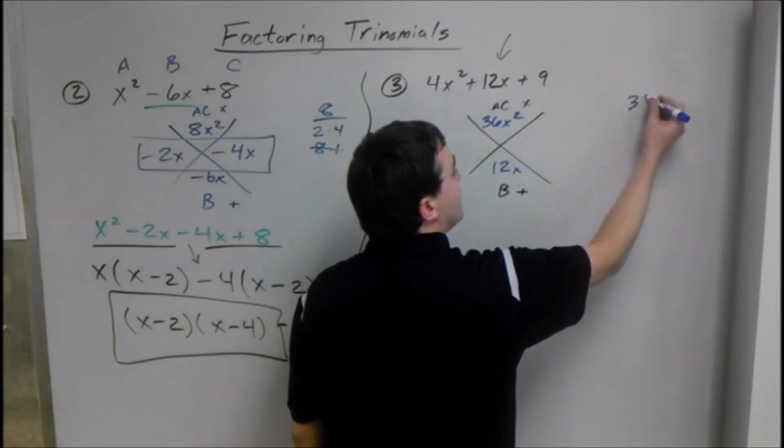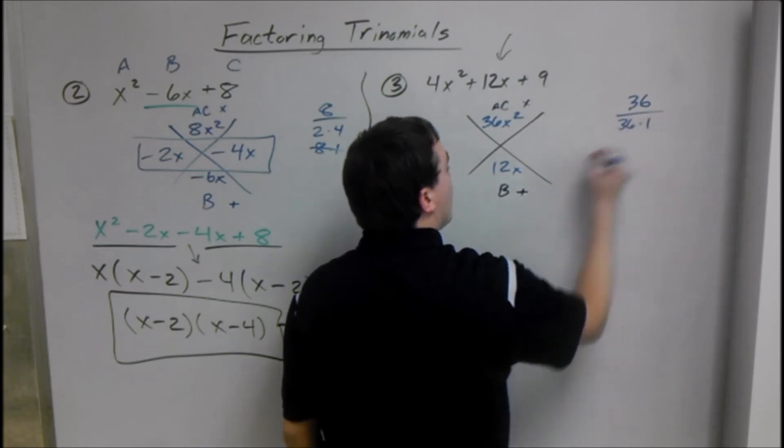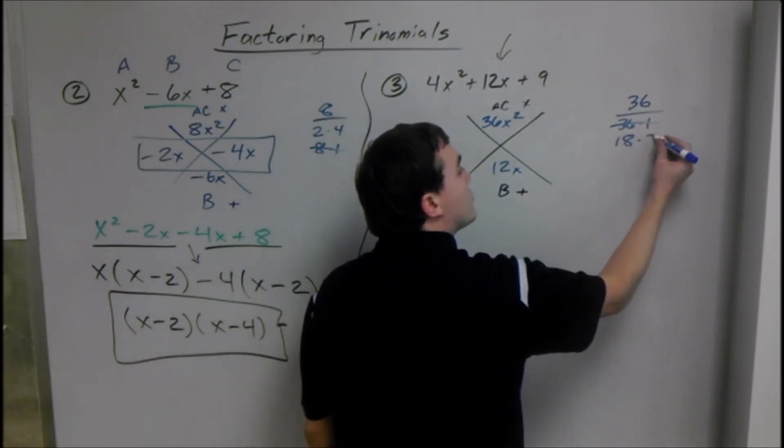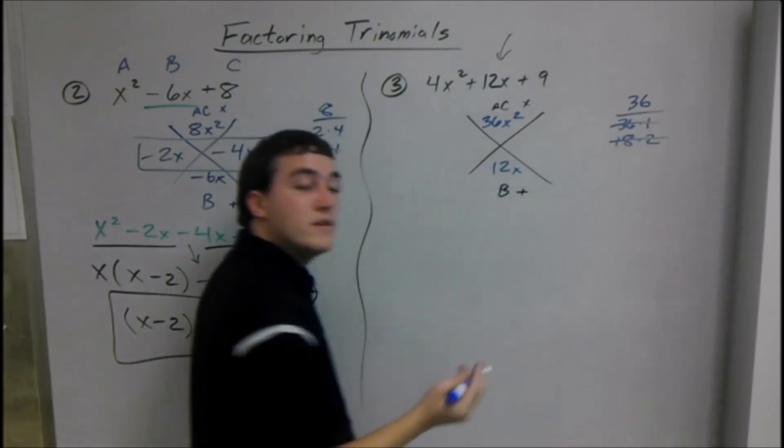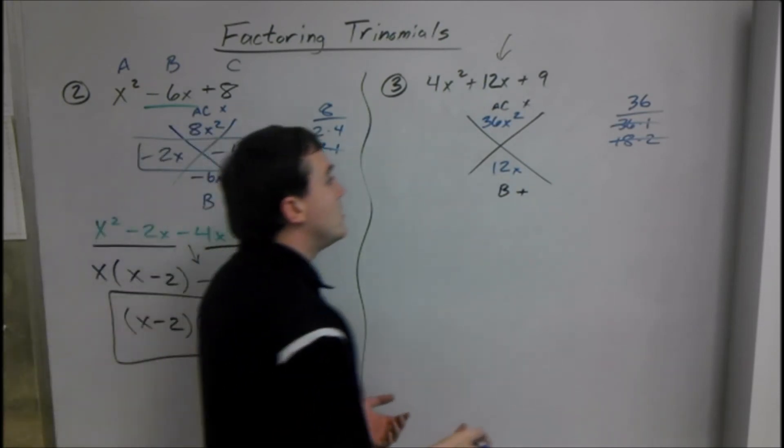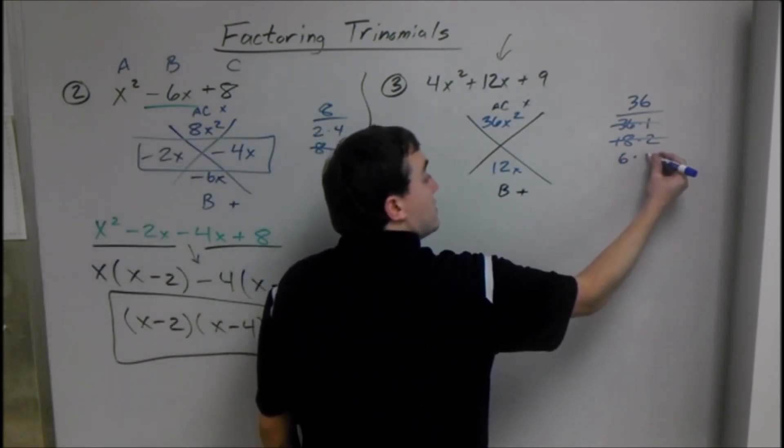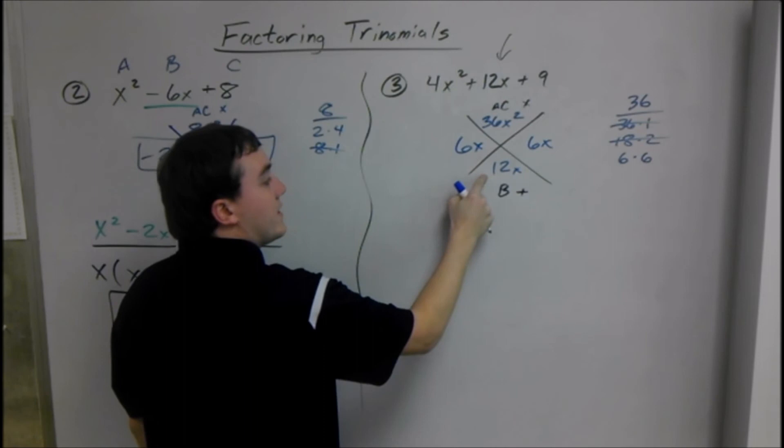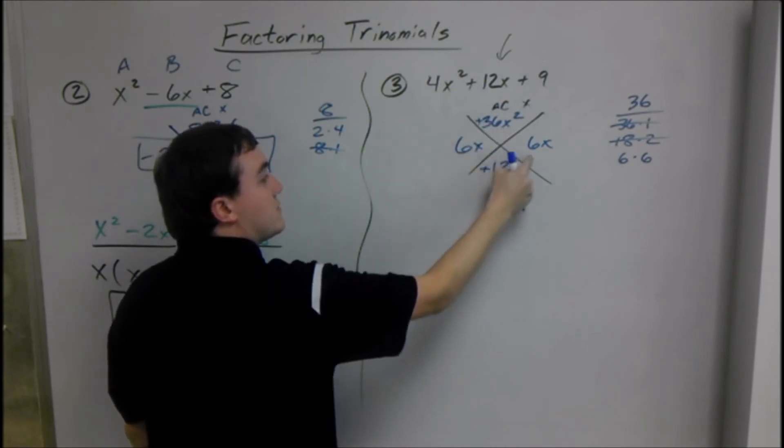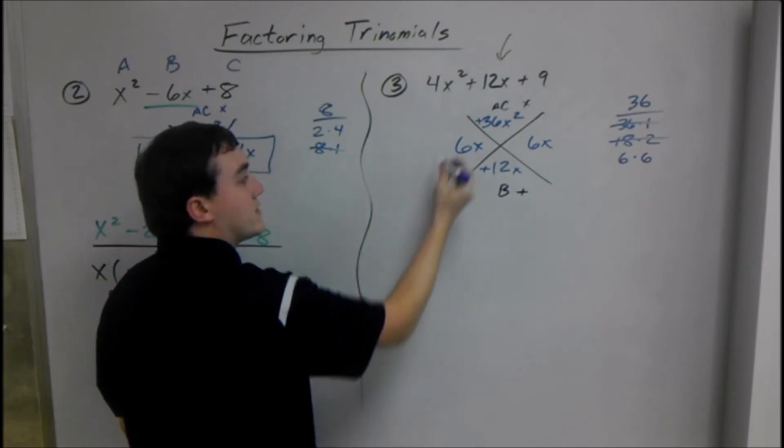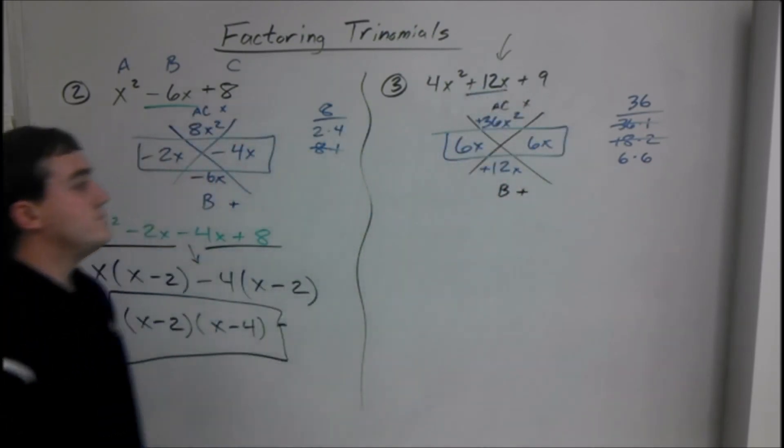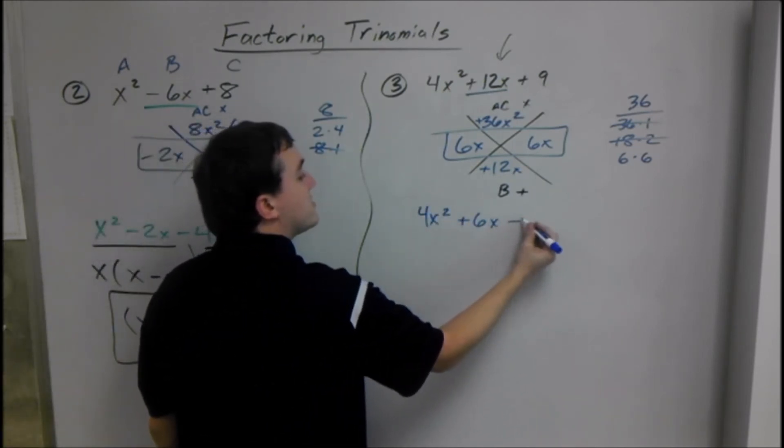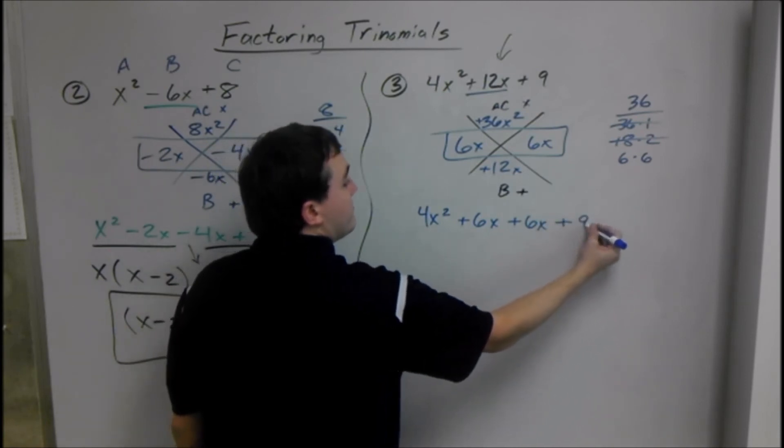Two things that multiply to equal 36. 36 times 1, that will never add up to 12, so we can get rid of that. We have 18 times 2. You can just keep going through your factors until you find two things that might add up to 12. 6 times 6 will add up to 12. So that's what we're using: 6X and 6X. This is positive and this is positive. 6 times 6 is positive 36, 6 plus 6 is 12. So these replace our middle term. We have 4X squared, plus 6X, plus 6X, plus 9.